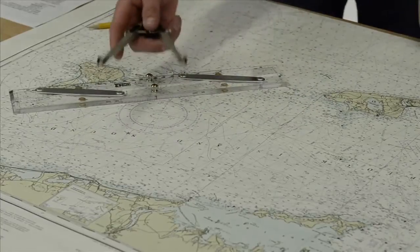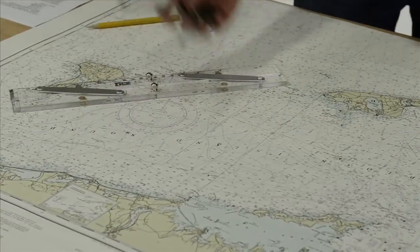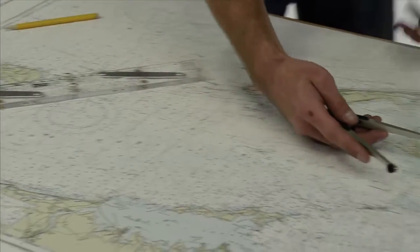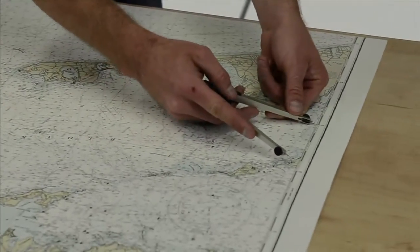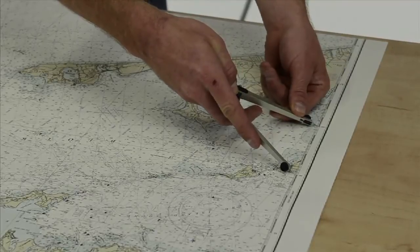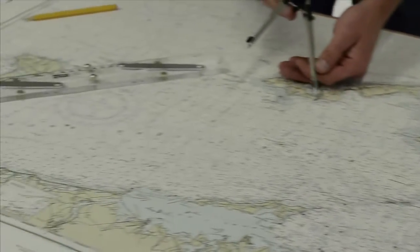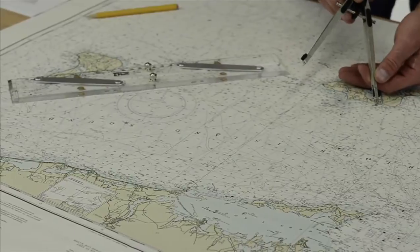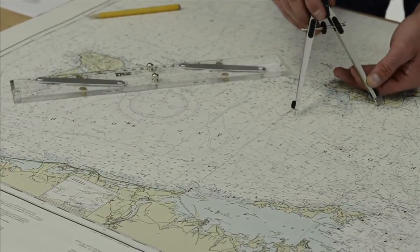Now we need to measure the distance of this line. Take our dividers and come over to the latitude scale. Get five nautical miles. We take this five and walk down the line from our starting point.